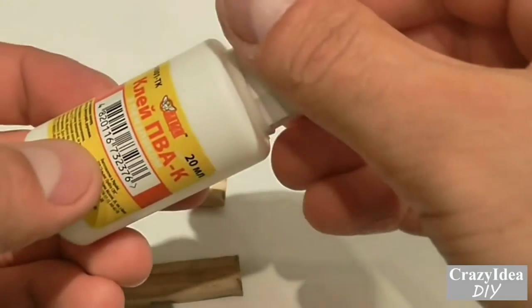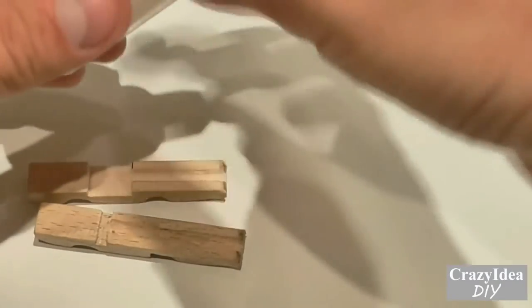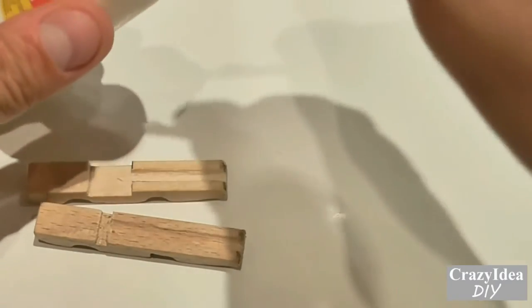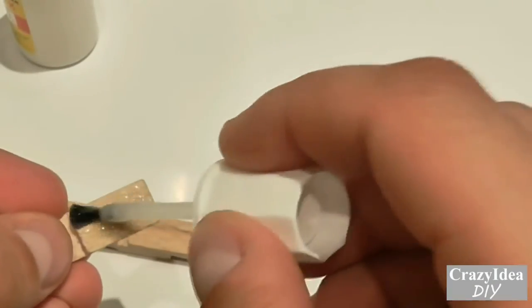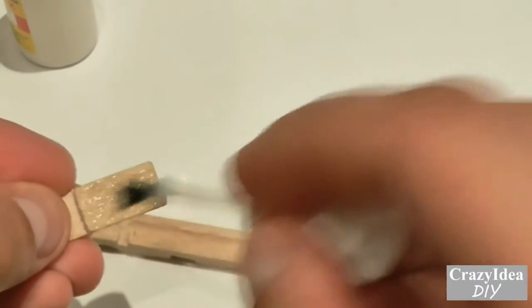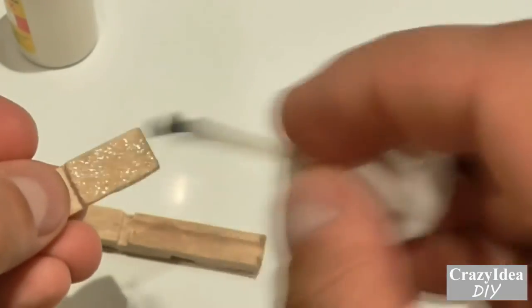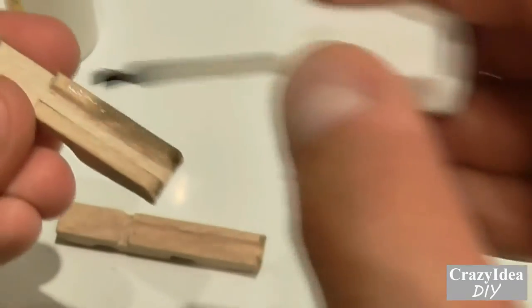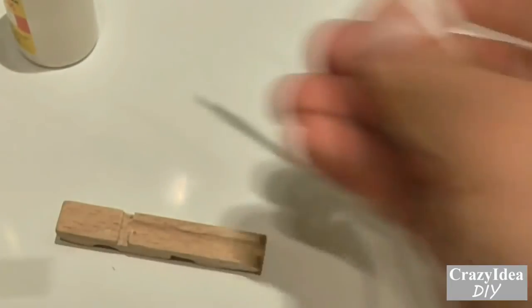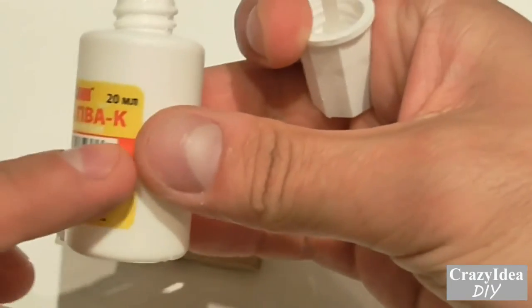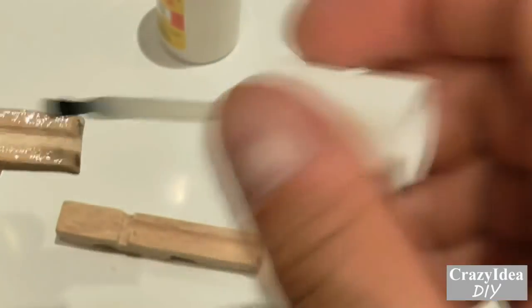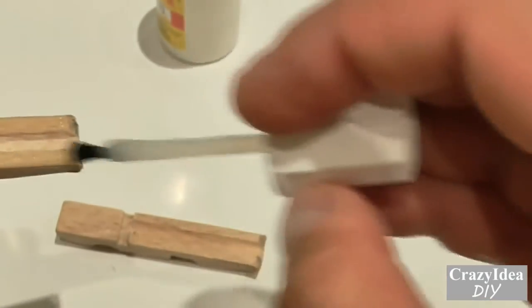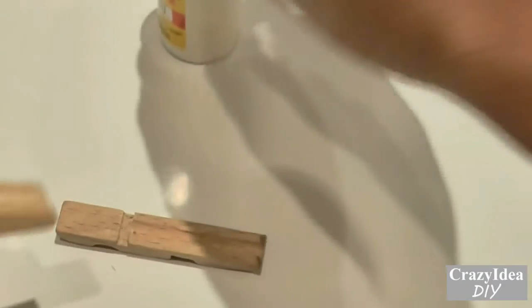Now we have to glue our peg. I will use PVA glue. It works great for paper as well as wood. A word of advice on the glue: when you buy it, look specifically for PVA-K. I'll show you in a bit. Here, PVA-K. Regular PVA has a different consistency and does not glue pieces together as well. It's a useful thing to have at home.